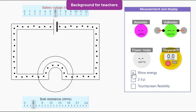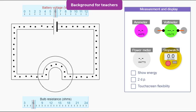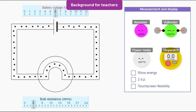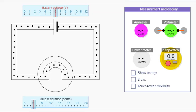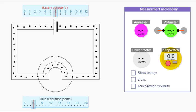It's easier if we have the show energy checkbox unticked. I'd probably introduce it by saying something like: current is about the movement of charges. The faster the charges move, the bigger the current. An ammeter is what we use to measure current, so let's put one in our circuit.